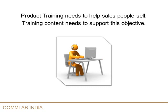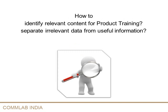Product content needs to make sense to sales professionals. It should help them talk about the product confidently in a sales situation. Therefore, the content developed for training should keep this objective in mind. How can this be done? How does one figure out what is relevant and what isn't to a salesperson while preparing a product training course? How should irrelevant data be weeded out and useful data be presented as crisp content to a salesperson?